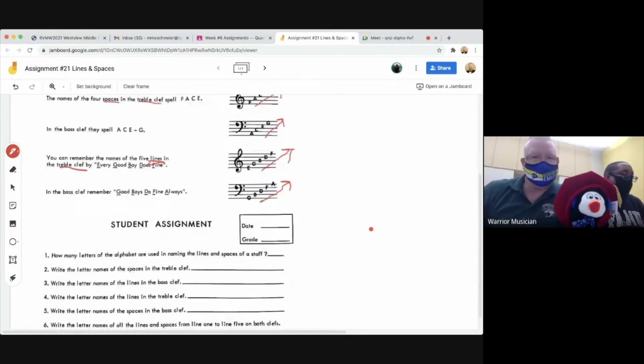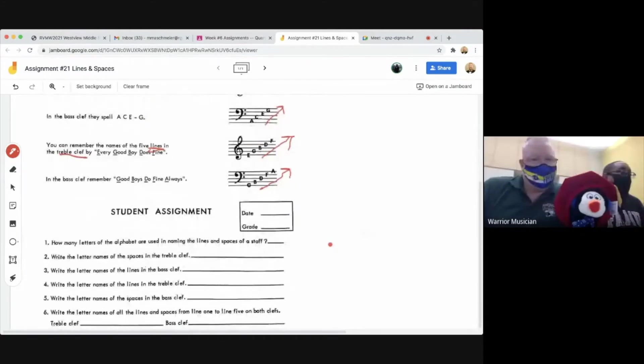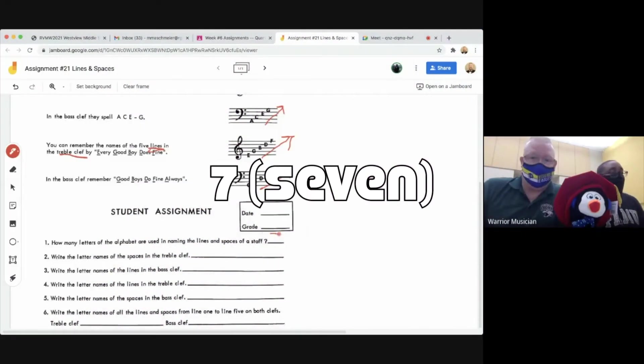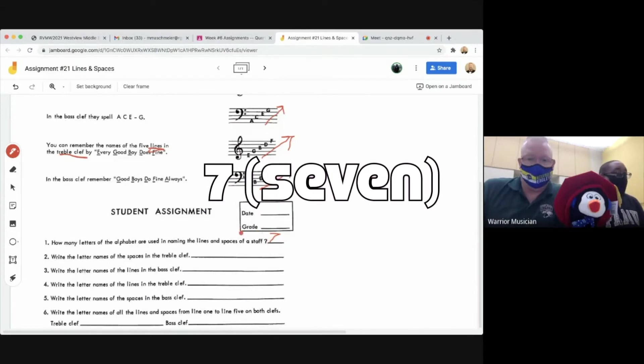So let's read through the questions, guys. We'll do number one together. So whoever can answer this, turn your microphone on. How many letters of the alphabet are used in naming the lines and spaces of a staff? Who can answer that question? Seven. Excellent. Seven definitely is correct. Thank you for answering.